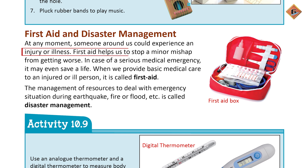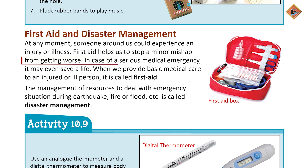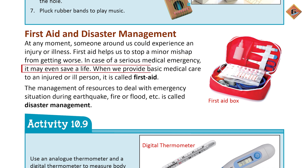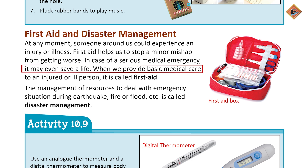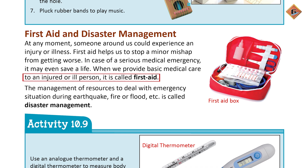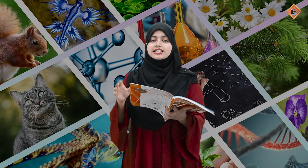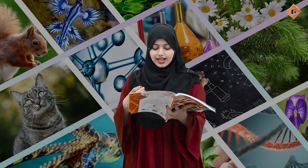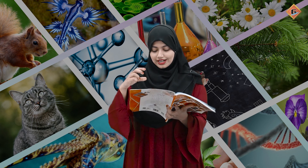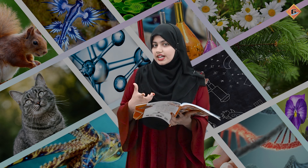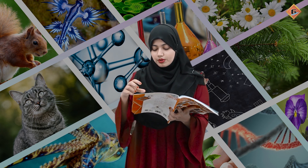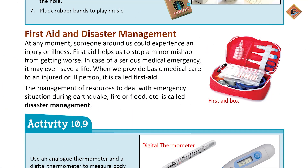Kabhi kabhi doston ko bhi zakhm lag jaata hai, tab hum kya karte hain — apna first aid nikalte hain jismein medical cheezein rakhi hoti hain. In the case of a serious medical emergency it may even save a life. Isliye aapne apne ghar mein bhi first aid box bana ke rakhna hai. When we provide basic medical care to an injured or ill person, it is called first aid. Aapke saamne book ke page 125 par first aid box dikha rahe hain.